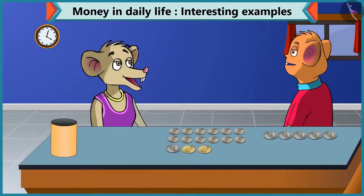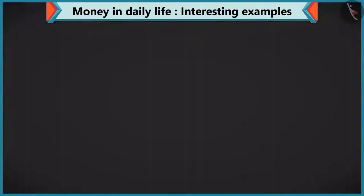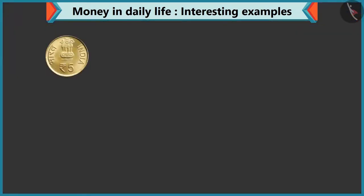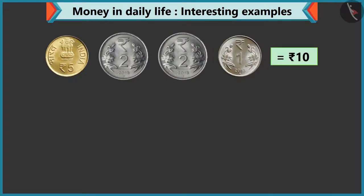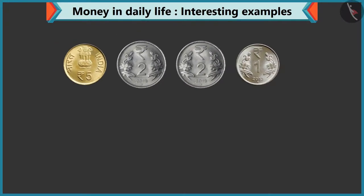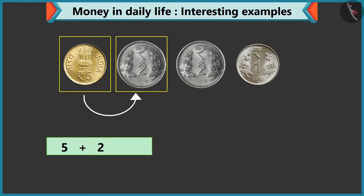Can we make 10 rupees in any other way? Yes, you can make 10 rupees by adding a coin of 5 rupees, a 2 rupee coin, and a 1 rupee coin. If we add 5 and 2, it is 7. Adding 2 more will become 9.